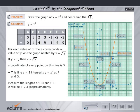Measure the lengths of OM and ON. It will be plus or minus 2.3 approximately. Now from the graph, root 5 equals plus or minus 2.3 approximately. Thank you.